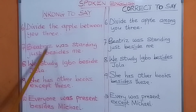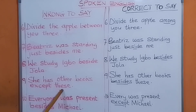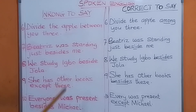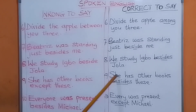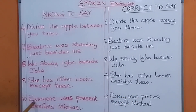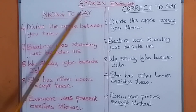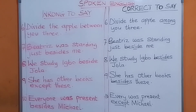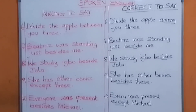Number nine: do not say 'she has other books except this' — if you mean in addition to this, you have to say 'she has other books besides this.' Number ten: 'everyone was present besides Michael' is wrong. If you want to say Michael is not part of it, say 'everyone was present except Michael.' Everyone was present except Michael.